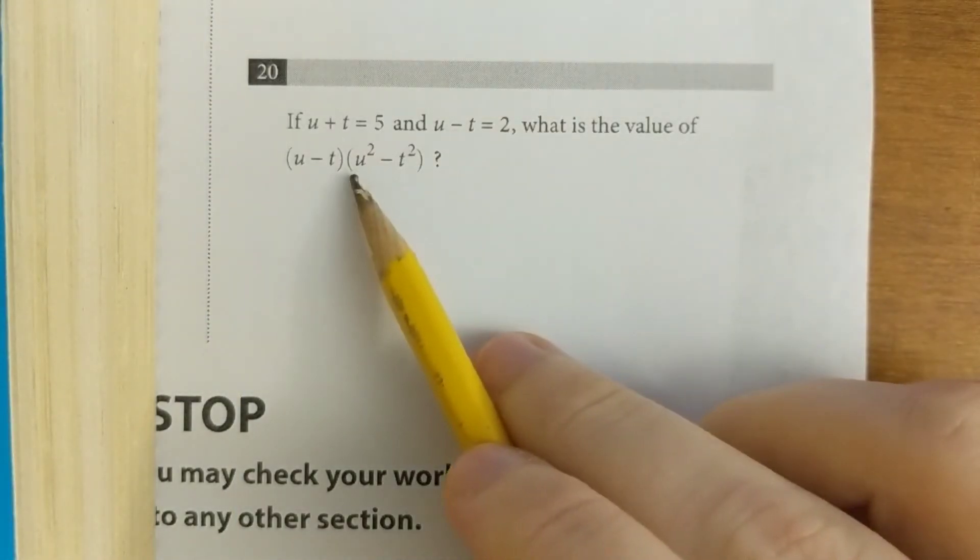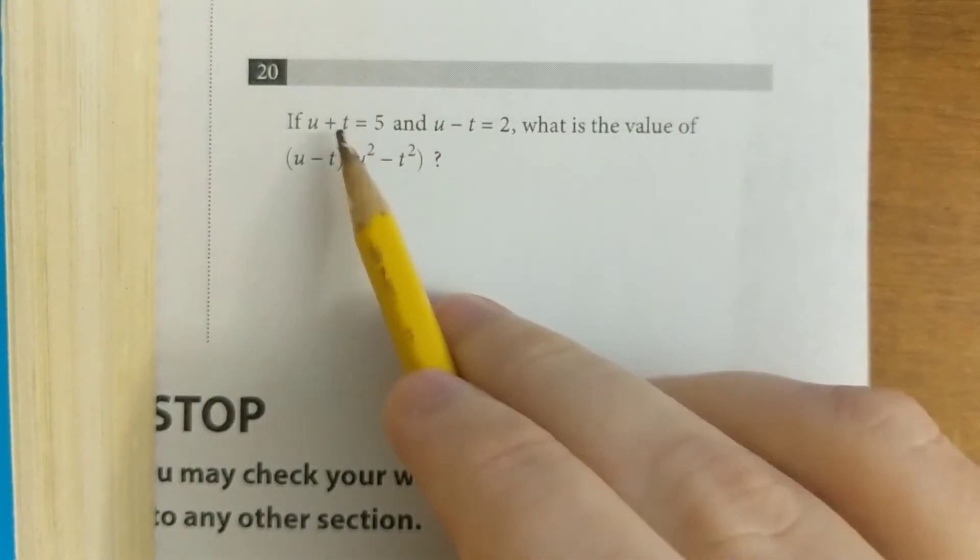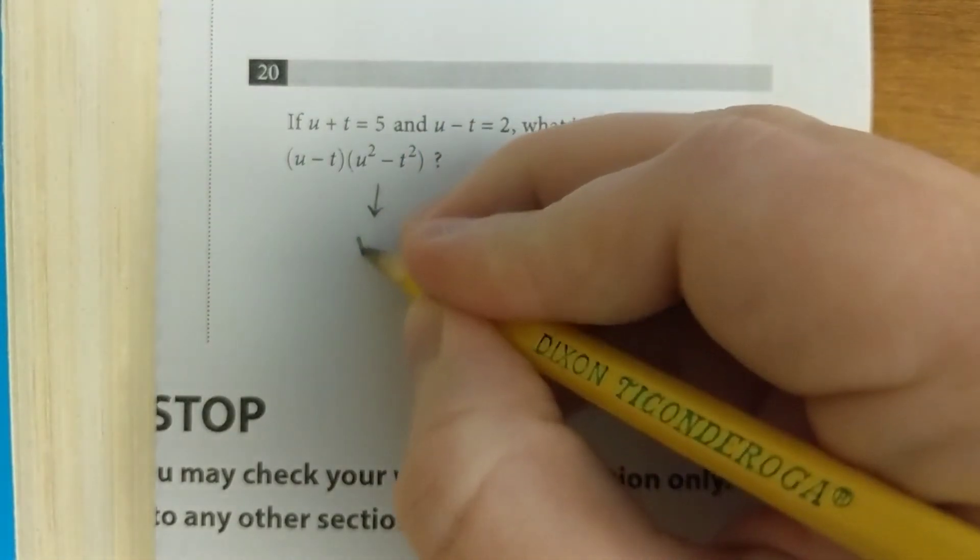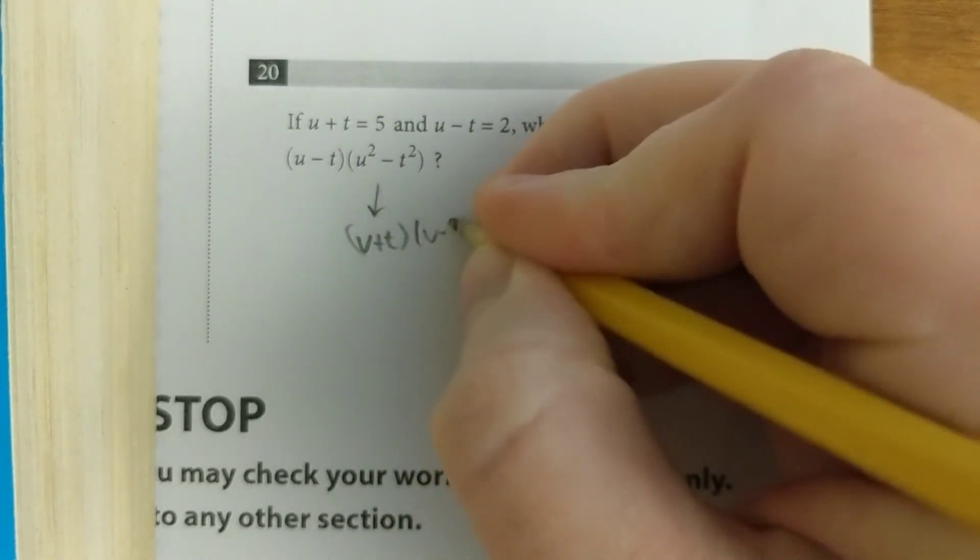In this one, you can see that this is the difference of two squares, and these are sort of its pieces. u² - t² is the same thing as (u + t)(u - t).